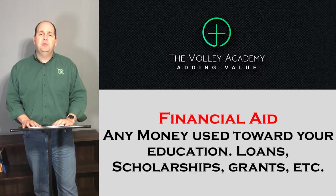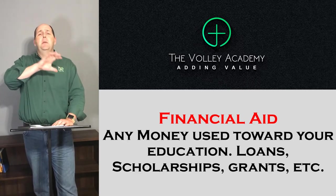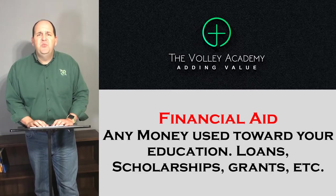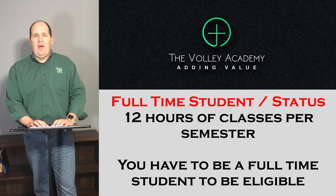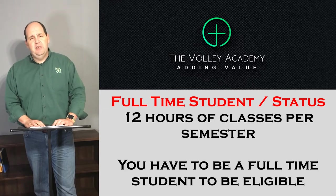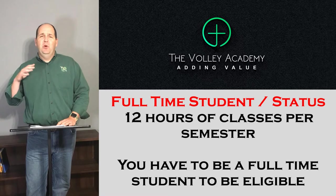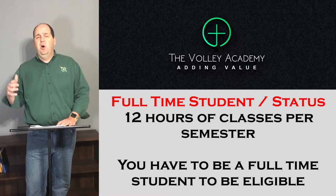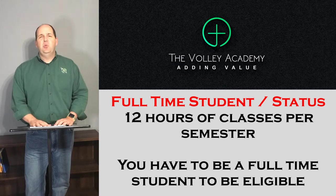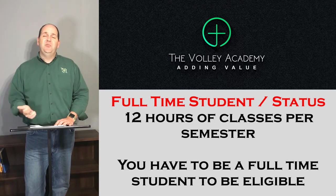Financial aid is any money you use to go to college — it could be a loan, an outside scholarship, or a scholarship from the school. A full-time student in most schools is 12 hours, which usually means four classes per semester. If you're in your last semester of senior year or are a graduate student, you might not need the full 12 hours. But for the normal athlete, it's 12 hours per semester — you can't go below that or you lose your financial aid and become ineligible. You have to be a full-time student to play sports.